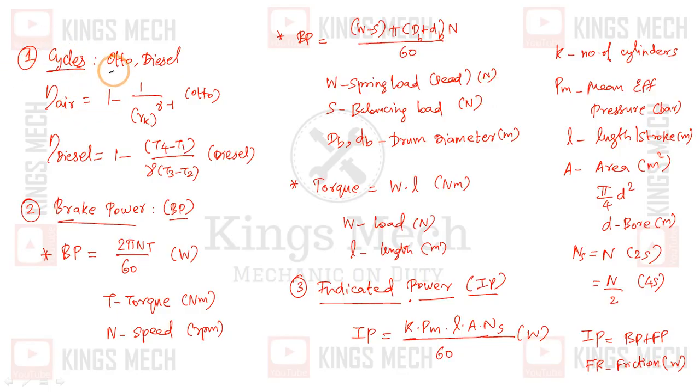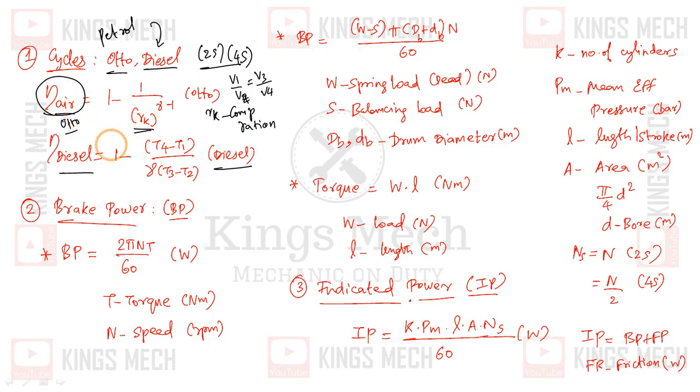IC engine uses Otto cycle for petrol engines and diesel cycle for diesel engines. There are two-stroke and four-stroke engines. For Otto cycle, air-standard efficiency is 1 minus 1 by Rk power gamma minus 1, where Rk is the compression ratio, which is V1 divided by V2. For diesel cycle, the efficiency formula involves V1 divided by gamma minus T3 minus T2. Most problems use these efficiencies and air-standard efficiency.